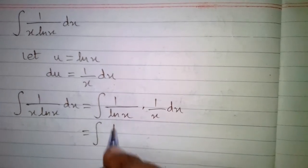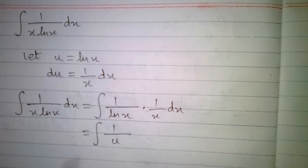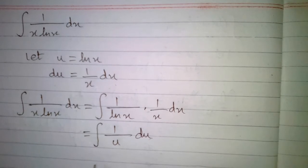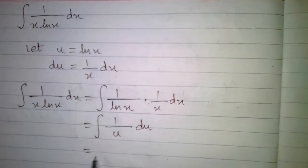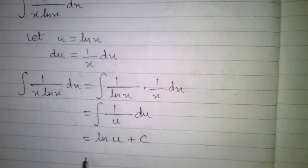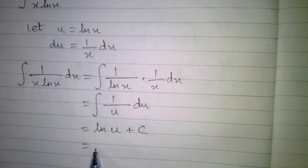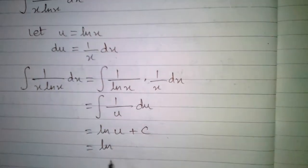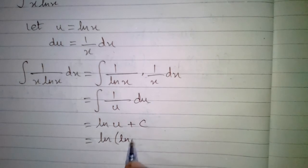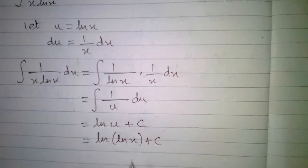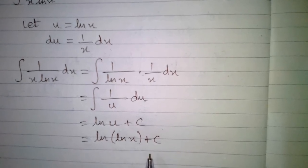So the above integral can be written as the integral of 1 upon u du. We know that the integral of 1 upon u is ln u plus c, where c is the constant. Substituting back u equals ln x, the integral of 1 upon x ln x with respect to x is ln of ln x plus c, where c is the constant.